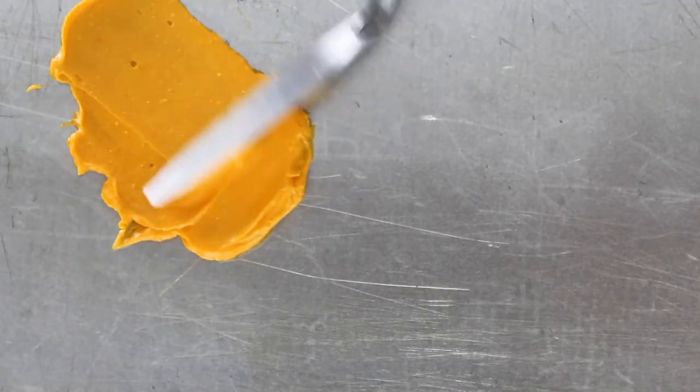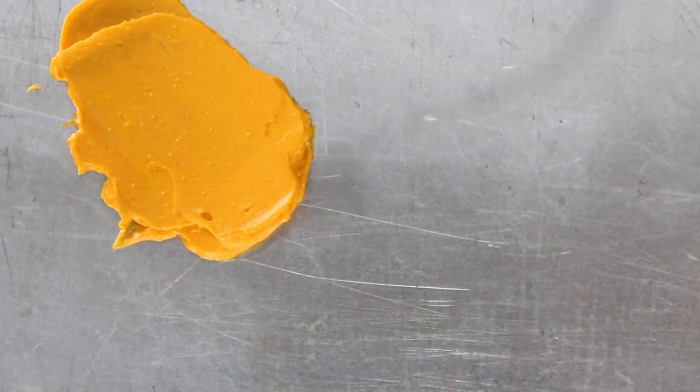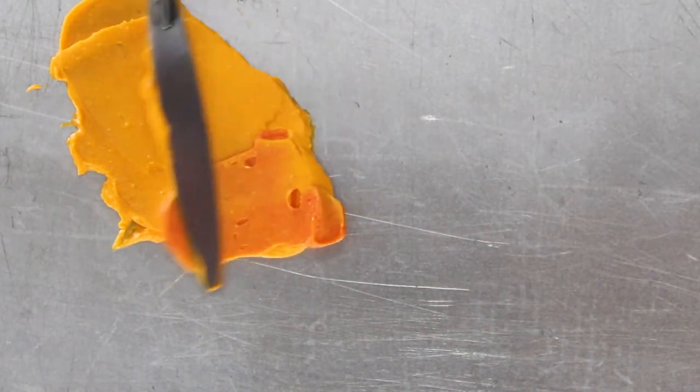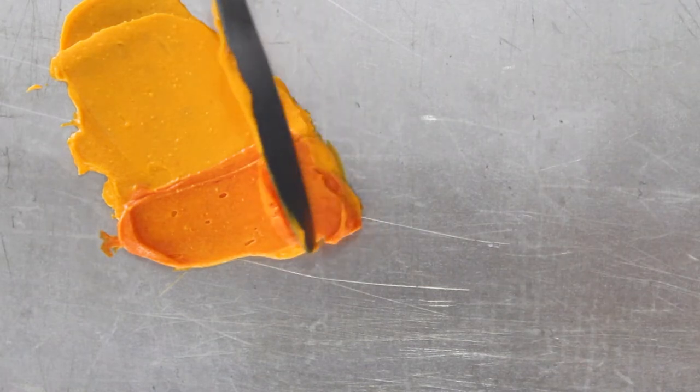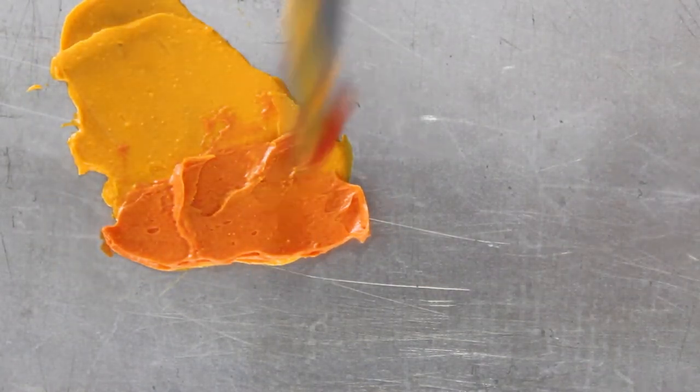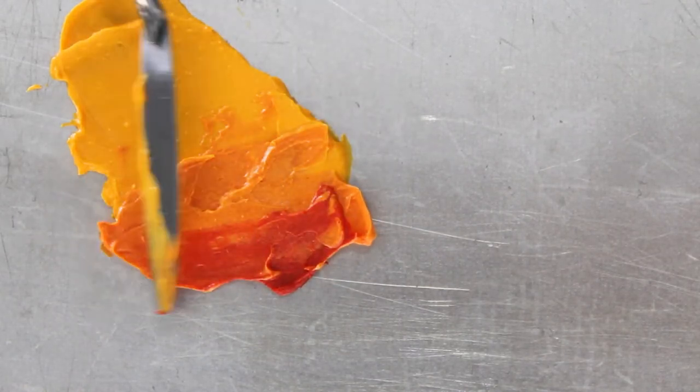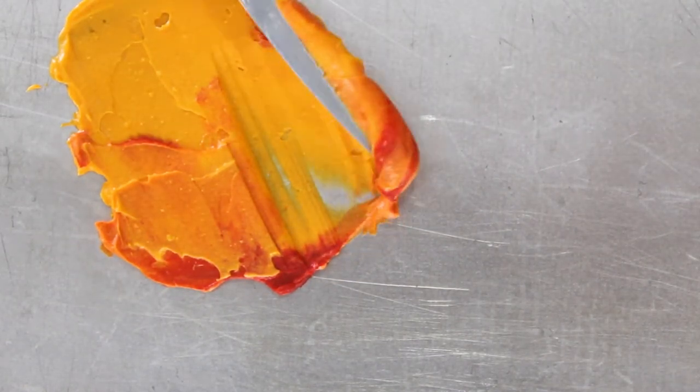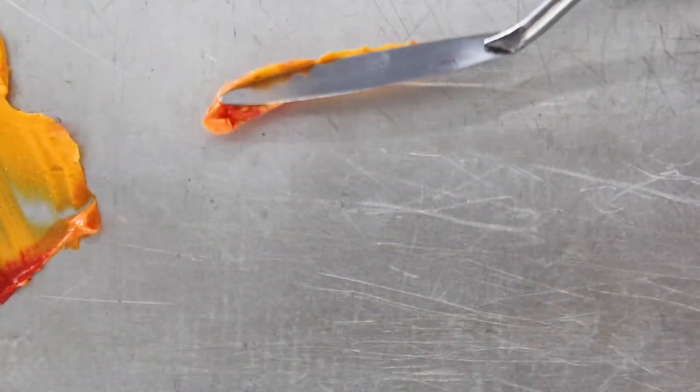One more technique I want to show you is how to make a gradient of colors. So here I'm making a large yellow patch, then I'm adding a bit of orange and an even tinier bit of red at the end. Now when I scrape perpendicular to this gradient, I'll get a mix of colors in my petals.